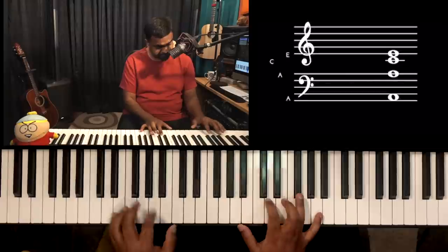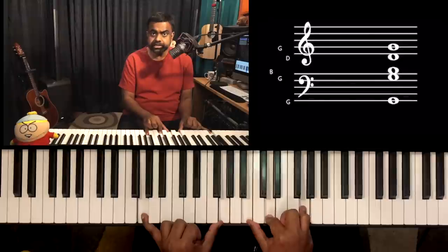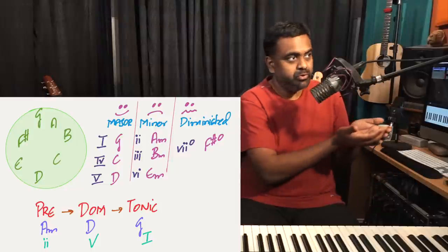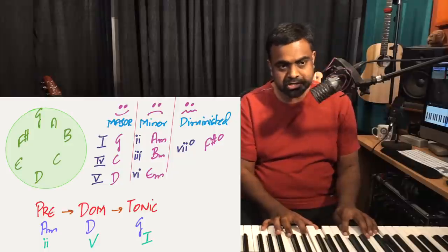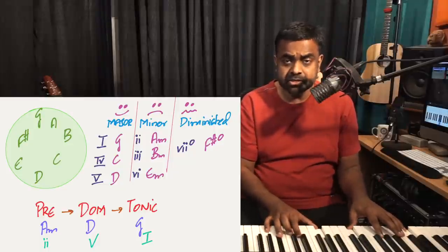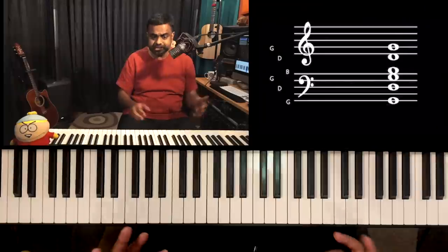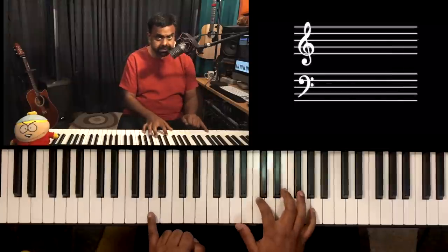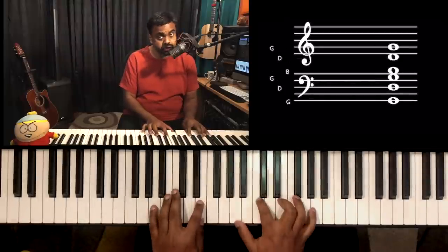A minor is the 2, D major is the 5, and G is the 1. You can feel that magnetic instability — like gravity, the A minor wants to go to D major, which then resolves to G and feels very stable. For your ear, also try singing the roots of each chord: A, D, G — 2, 5, 1.